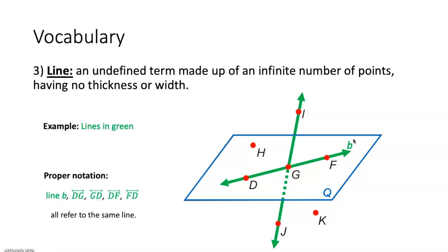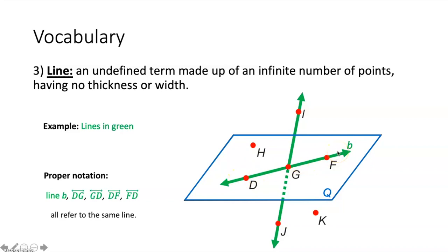A line is an undefined term made up of an infinite number of points having no thickness or width. Here you can see our lines in green. We have line B, because it has a little lowercase letter at the end of it. To denote a line, you just need to put two points that are on the line and draw the little line symbol above it. Line B we can call line DG, GD, DF, or FD. If we talk about this vertical line, we could say that this is line GI, IG, GI, or IJ.